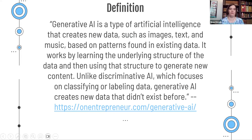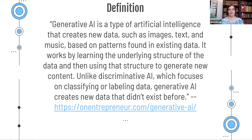According to oneentrepreneur.com, this is a definition of generative AI. Essentially, it's a type of AI that creates information based on patterns within what it already has in terms of information — so it generates new content. And that last sentence: unlike discriminative AI, which focuses on classifying or labeling data, generative AI creates new data that didn't exist before. That's the basis of the definition of generative versus discriminative AI.